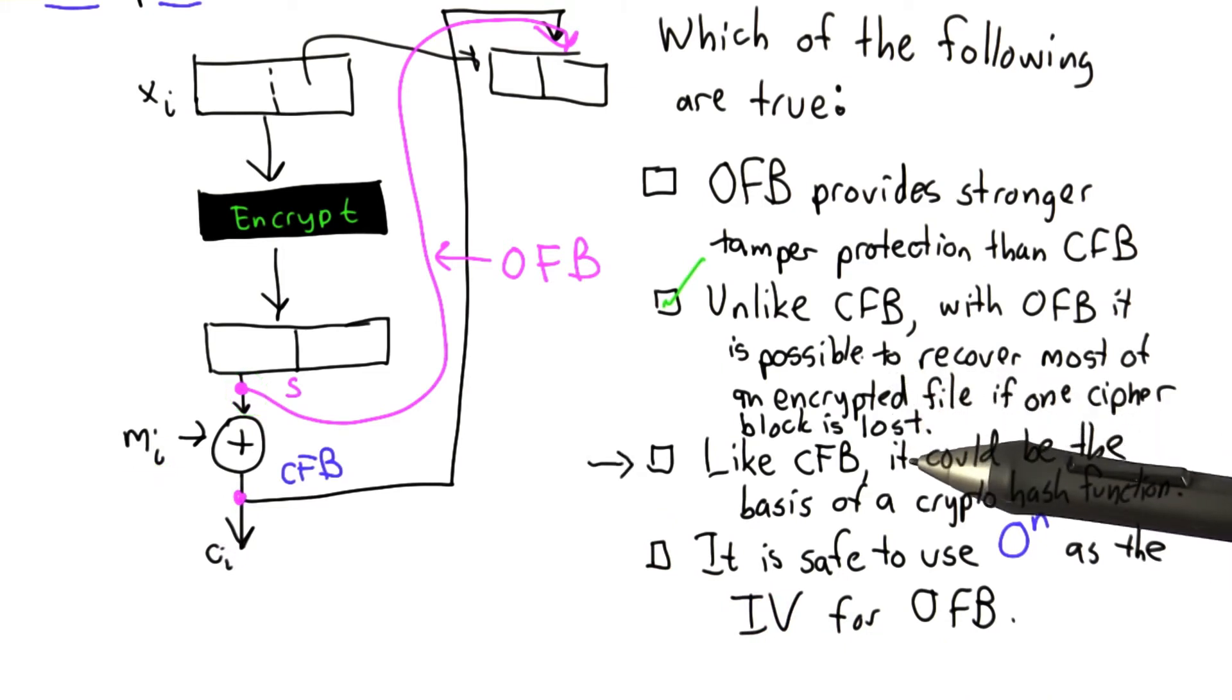Likewise, this shows that output feedback mode won't make a good cryptographic hash function. A cryptographic hash function must have the property that the final output depends on all the blocks in the message.